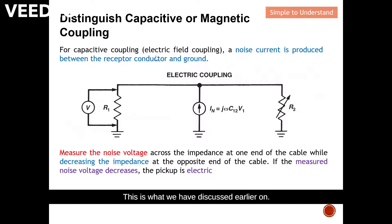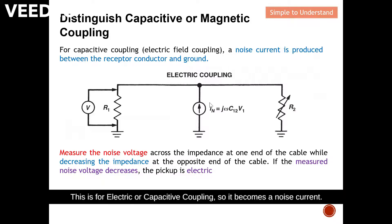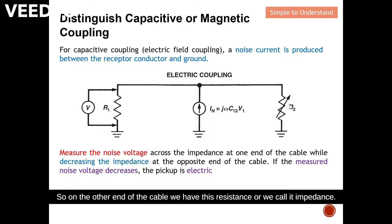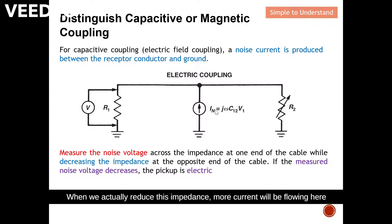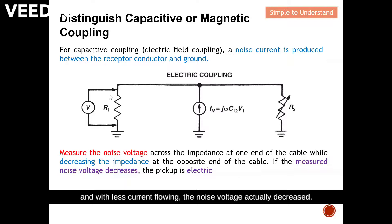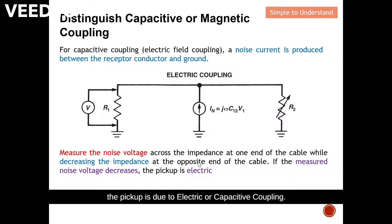For capacitive coupling, a noise current is produced between the receptor conductor and ground — this is the electric or capacitive coupling case, and it becomes a noise current. We first measure the noise voltage on the victim. On the other end of the cable we have a resistance or impedance. When we reduce this impedance, more current will flow through it and less current will flow through the victim path. With less current flowing, the noise voltage actually decreases. When the noise voltage decreases, we know the pickup is due to electric or capacitive coupling.